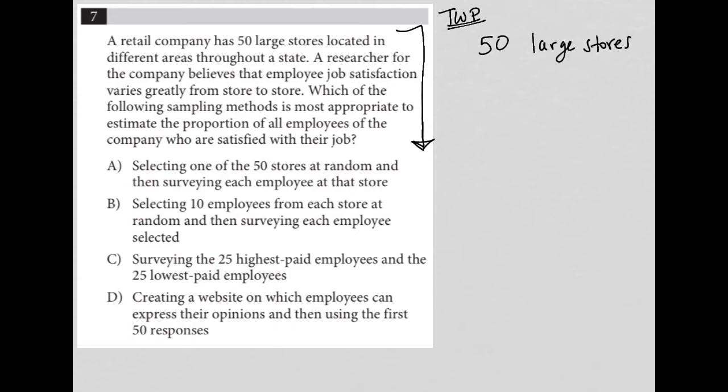We have to go through every answer choice here. There will be some that are obviously wrong, but there might be a couple that seem like they could be good and we have to figure out which one is the best one. Choice A says: selecting one of the 50 stores at random and then surveying each employee at that store. That would be a great method for figuring out how employees feel at that particular store, because you're talking to each of the employees, but not really for all 50 stores. So choice A is lacking — the information won't be reflective of all 50 stores.